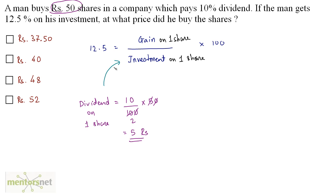Let us put that here. So I have 12.5 equals gain is 5 times 100 divided by investment on one share, which is the market value. So that is MV. So MV, that is what we have to find, is equal to 500 by 12.5. And that will come out as 40 rupees.